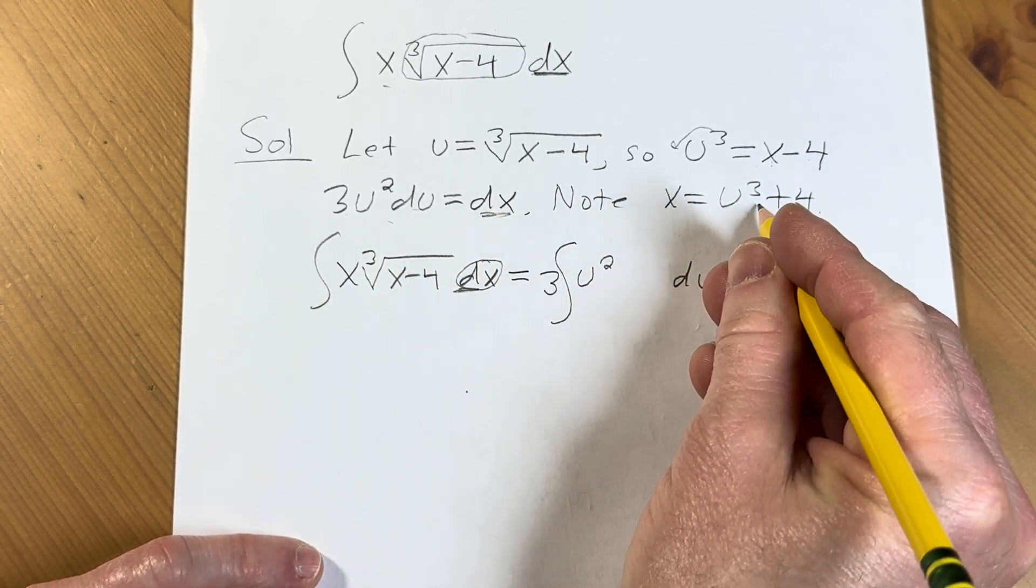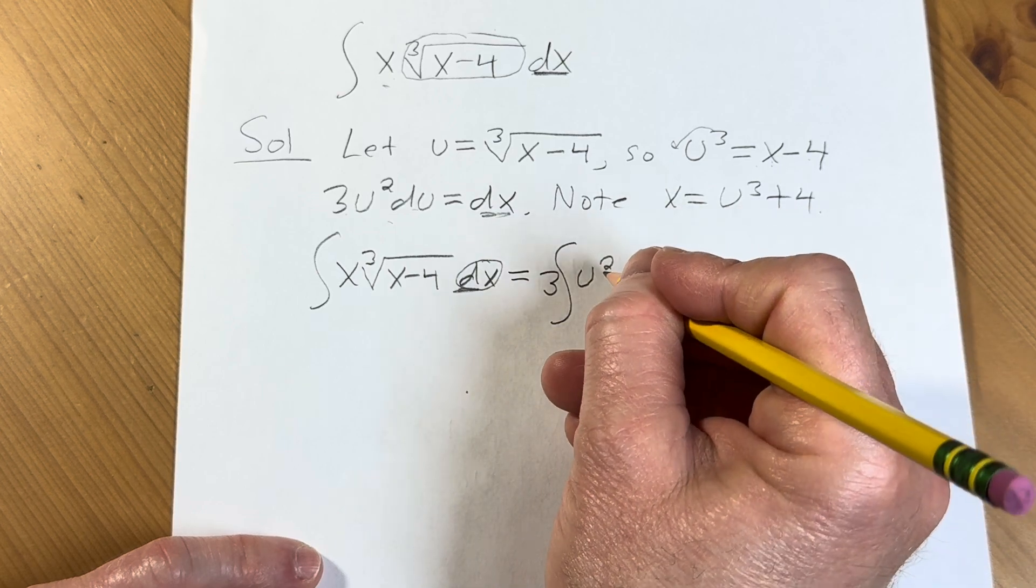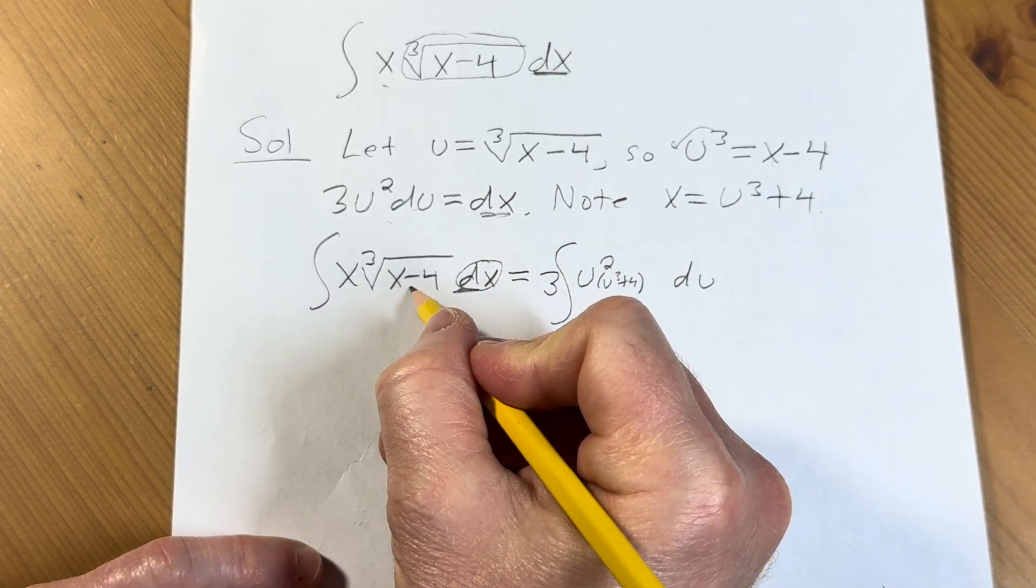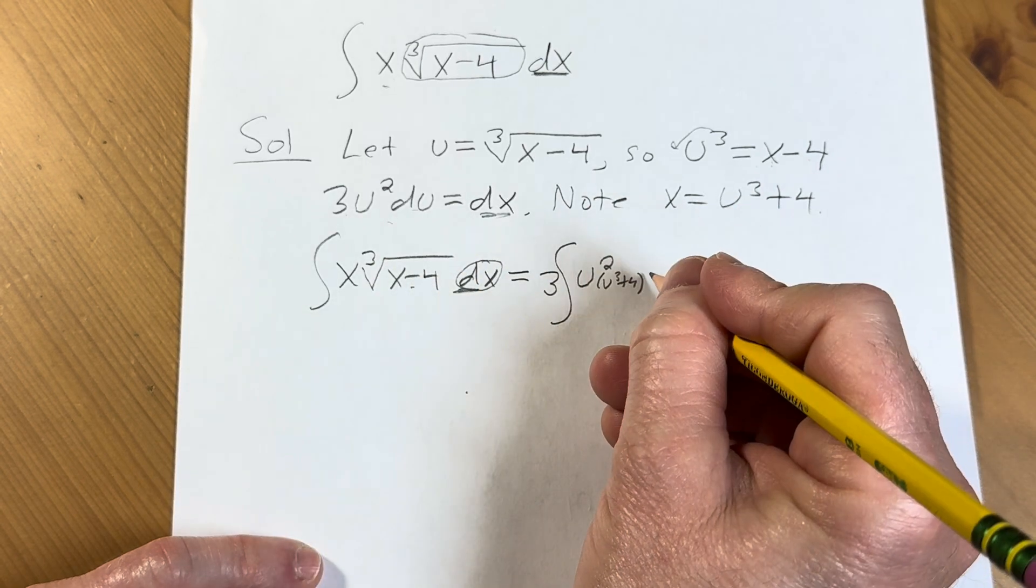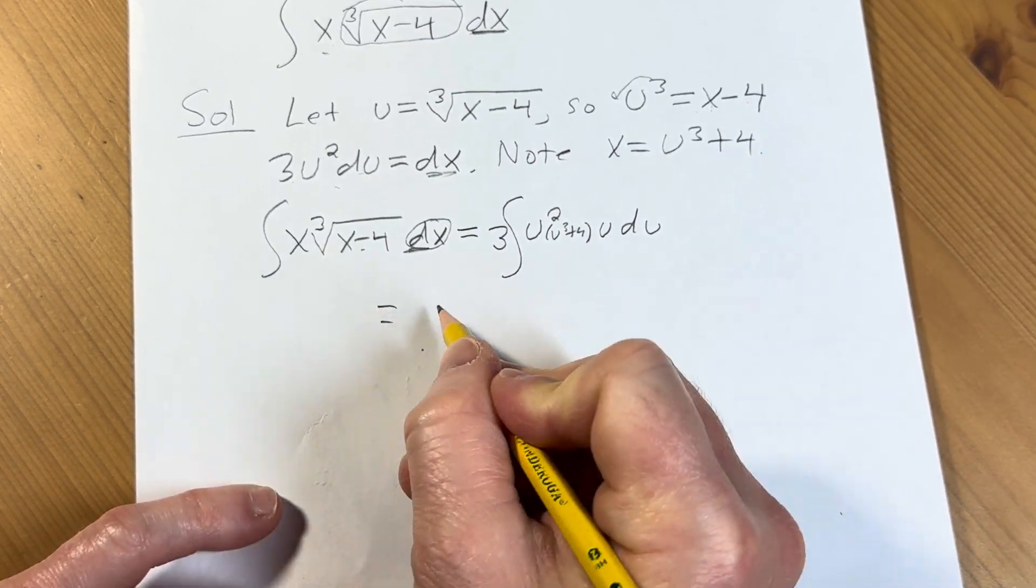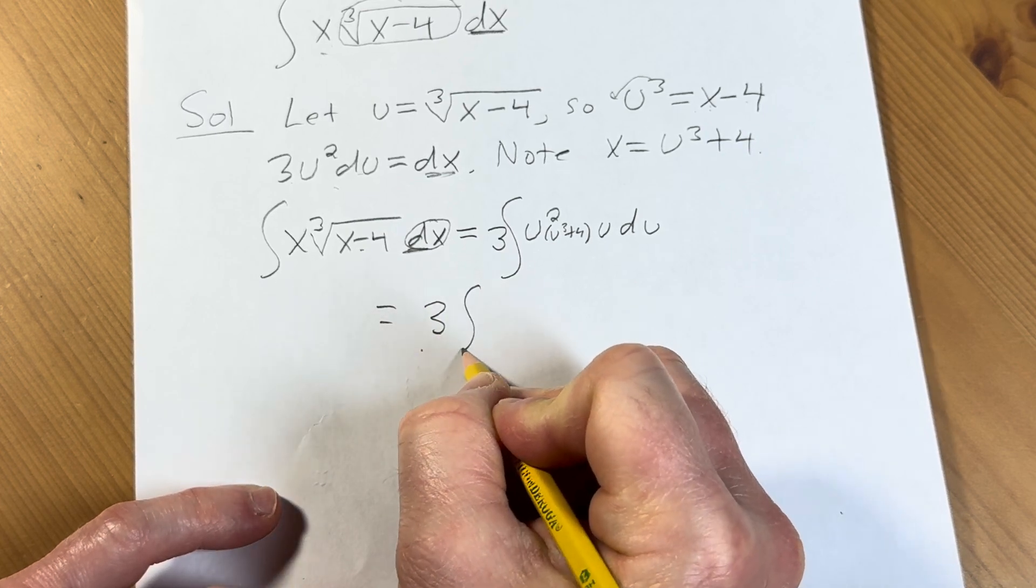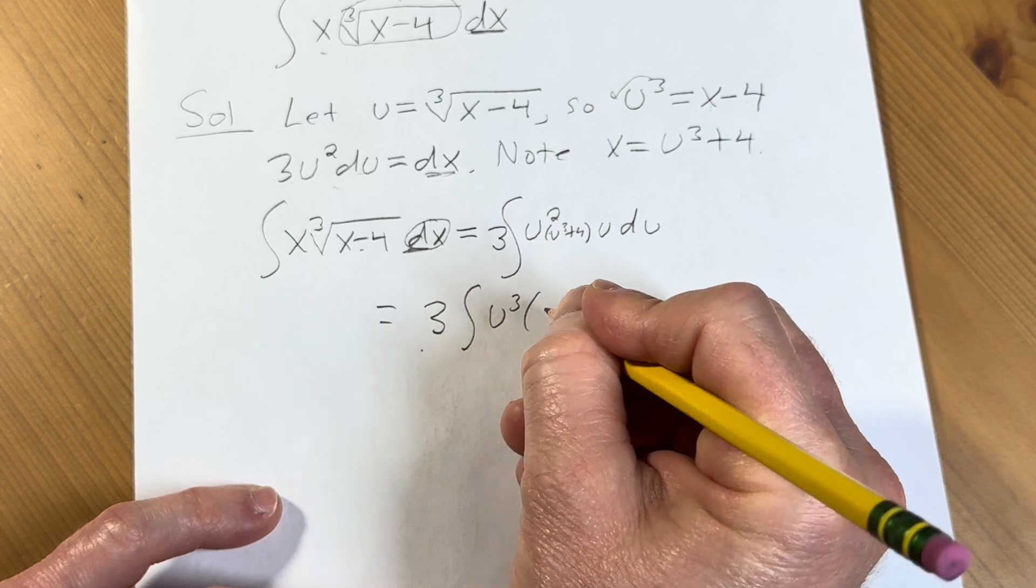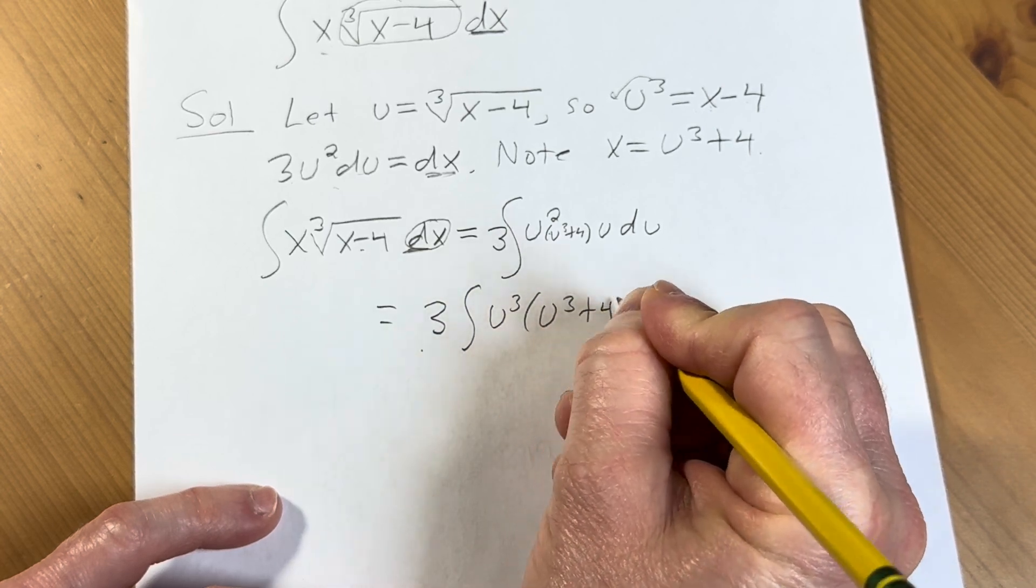Our x is u cubed plus 4. And then this piece here is going to be u, just like that. It's a little bit hard to see. I'm going to write a little bit bigger. This is equal to 3 times the integral of, so u times u squared is going to be u cubed. And then we have u cubed plus 4 du.